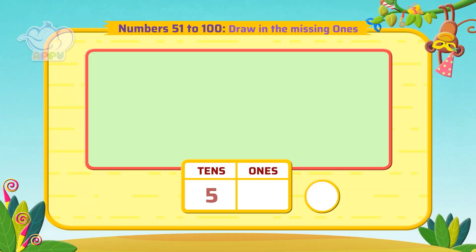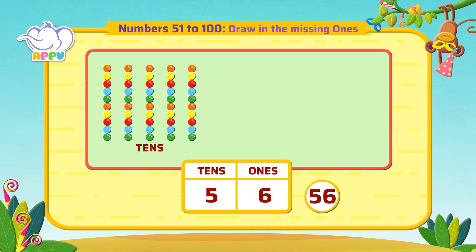The answer is given as 56. We see 5 groups of 10 beads each, so that is 5 tens. Now we have to draw the 6 missing beads: 1, 2, 3, 4, 5, and 6.